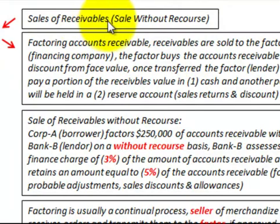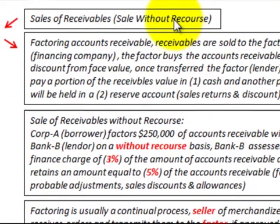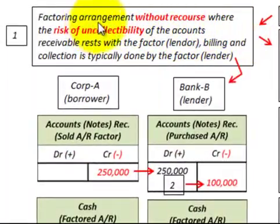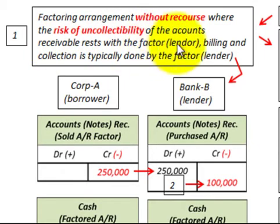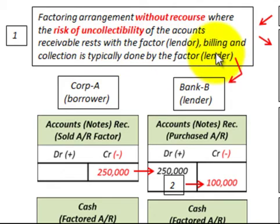Here we're going to be looking at sales of receivables and a sale without recourse. We're going to have a factoring arrangement without recourse where the risk of uncollectibility of the accounts receivable rests with the factor or the lender. Billing and collection is typically done by the factor or the lender.